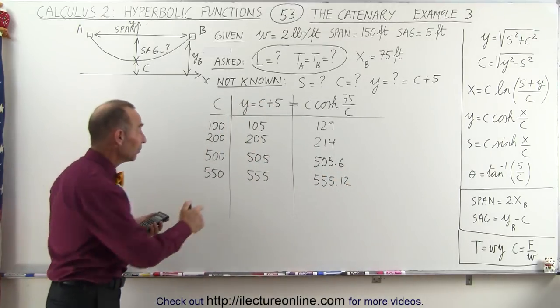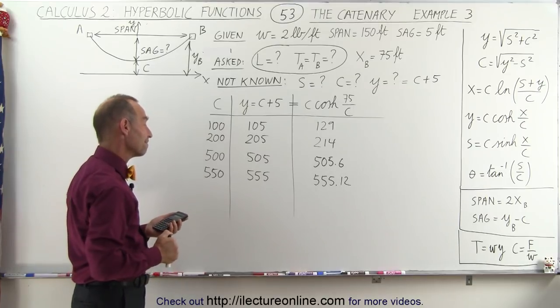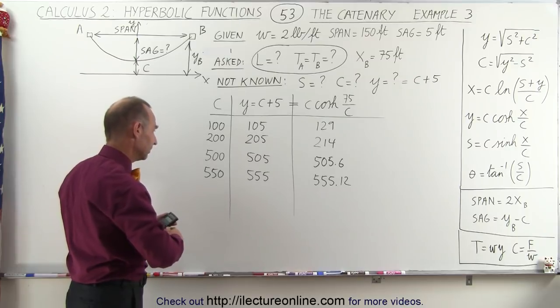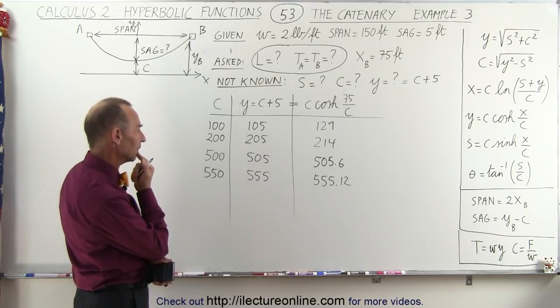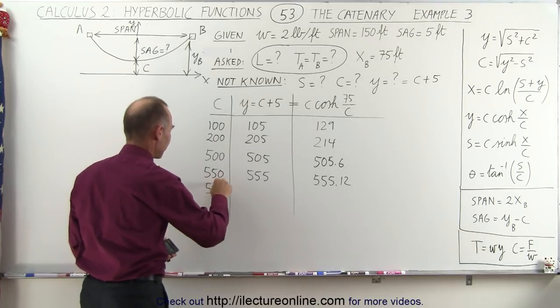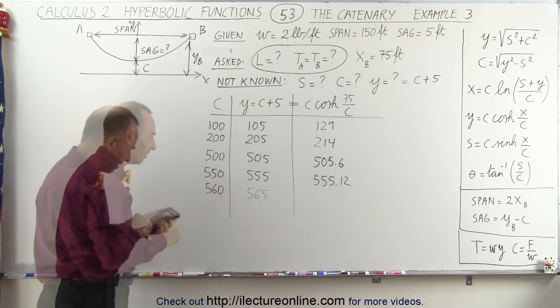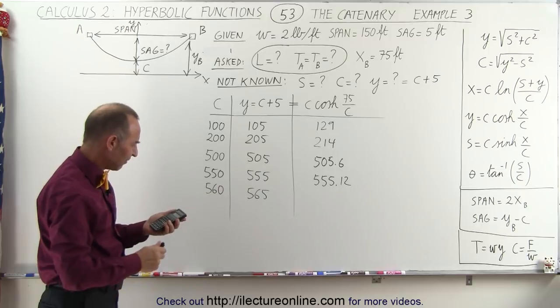Now we're getting really close. Still bigger. That means we need a bigger number for c. Let's see here. How about 555. All right. 555. Maybe not. How about 560. I'm going to try 560. All right. And we get 565.03.